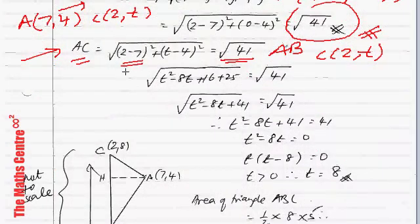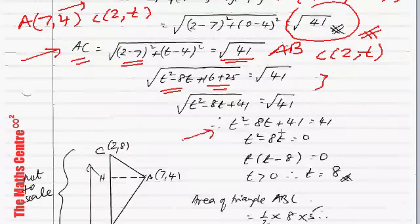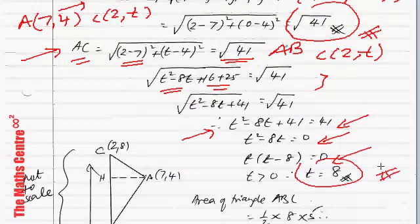Clean this up. 2-7 squared is 25. 25 plus 16 is 41. Inside the brackets, we have T squared minus 8T. You will get square root of T squared minus 8T plus 41 equals square root of 41. Square both sides, you will get T squared minus 8T plus 41 equals 41. So T squared minus 8T equals 0. Factorize: T times (T-8) equals 0. The question told me that T is bigger than 0, so the value of T equals 8.